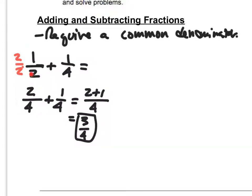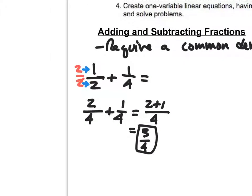When I multiplied by two over two, I took two times one which gave me two, and two times two which gave me four. The reason I multiply by two over two is because two divided by two equals one, so I'm not changing the value of one half. This just puts it in a form to be able to add these together.